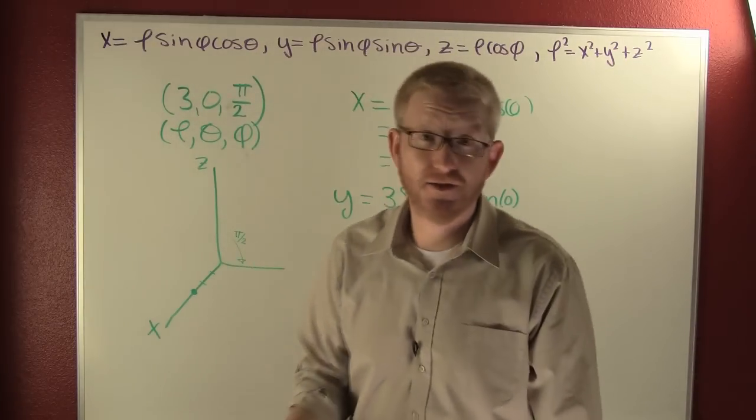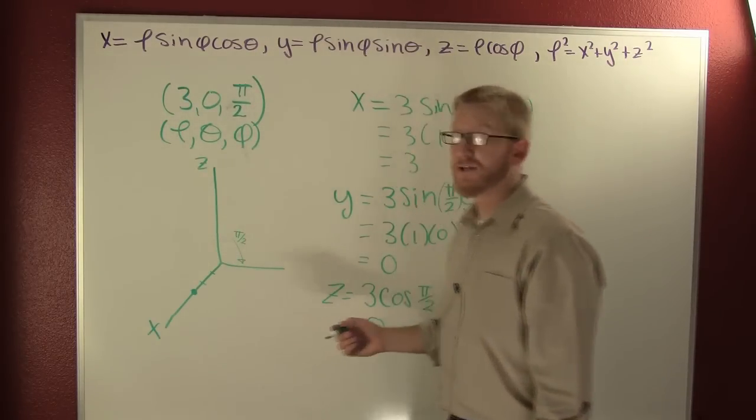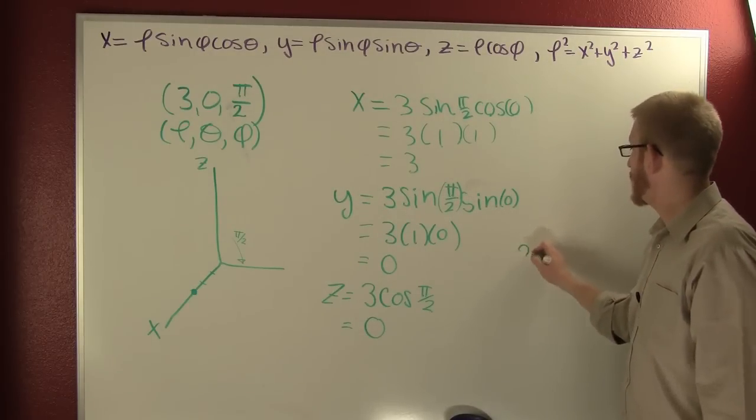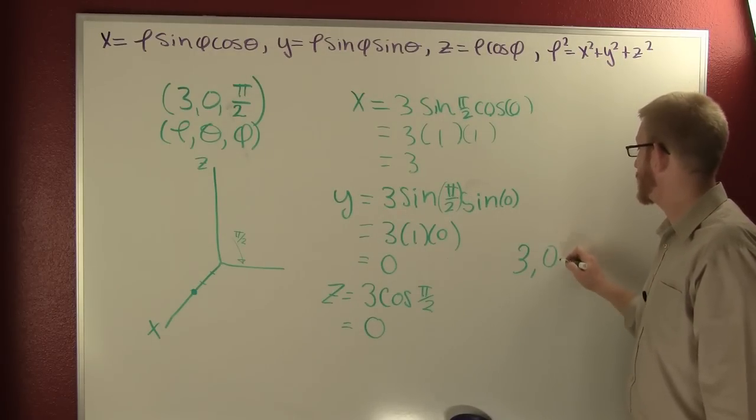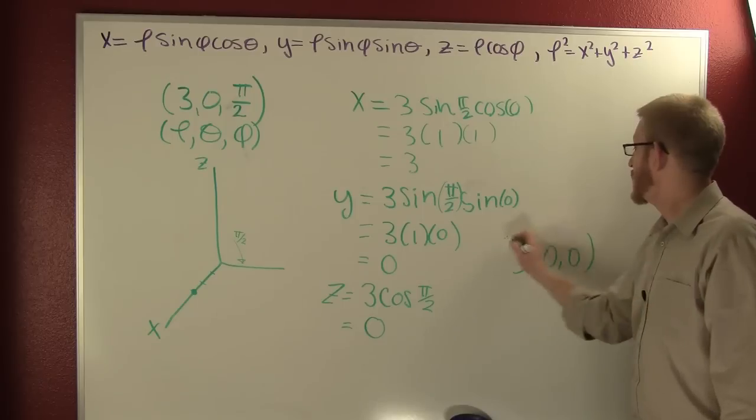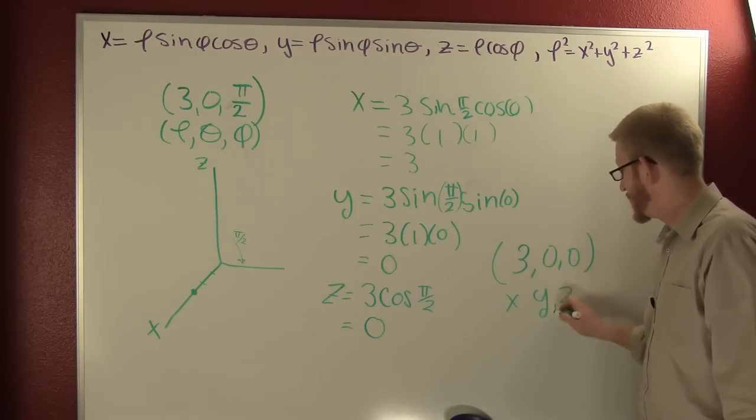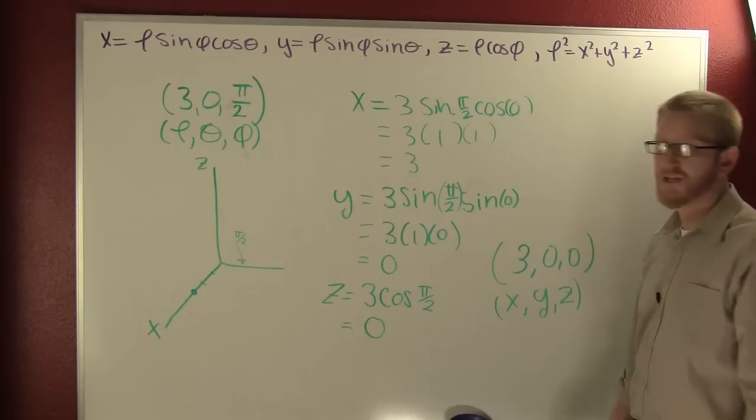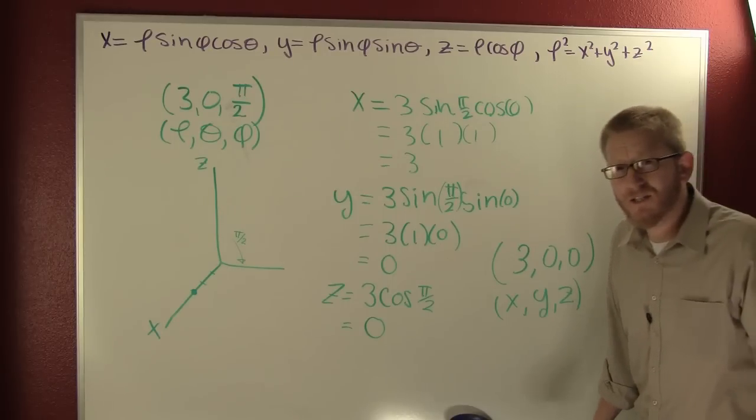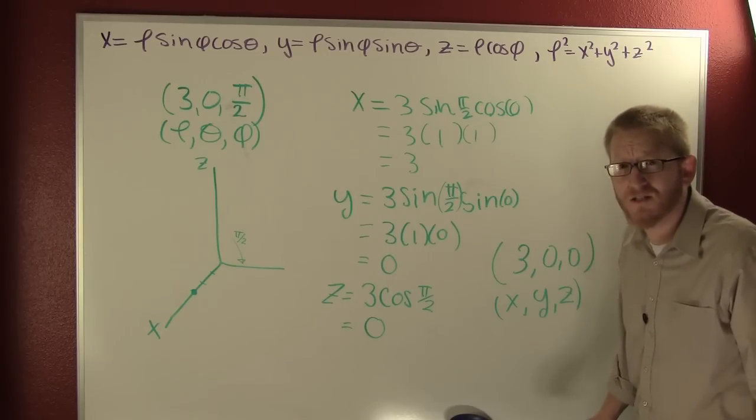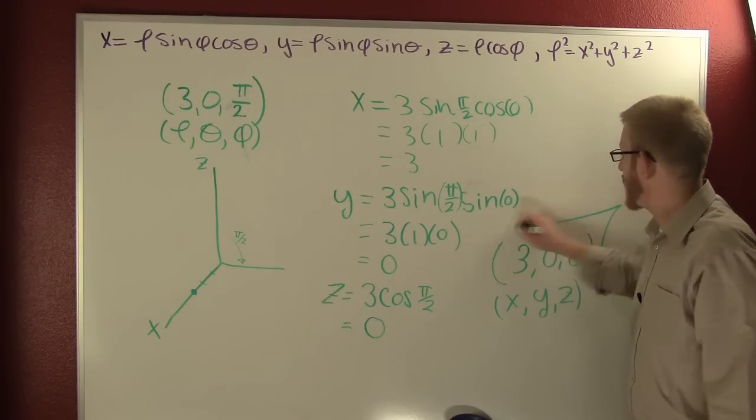And then how am I gonna write my answer? My answer is a point. It's the point (3, 0, 0), and this is in x, y, z.